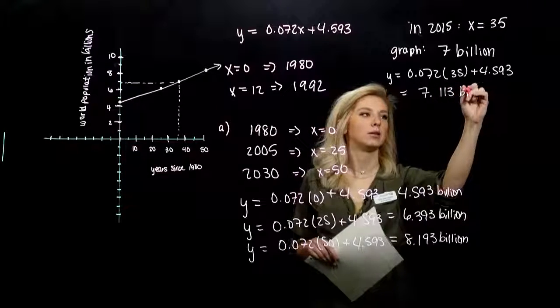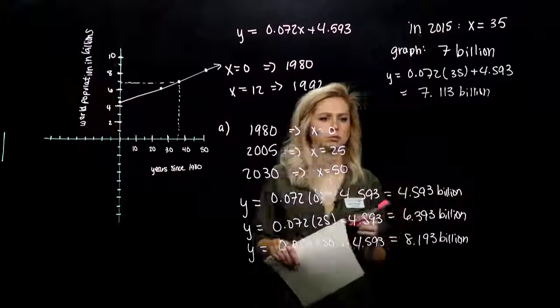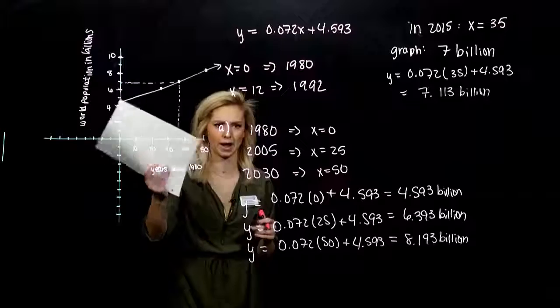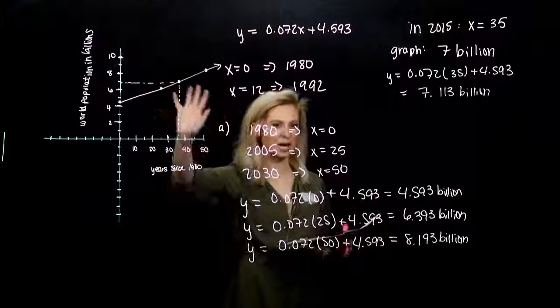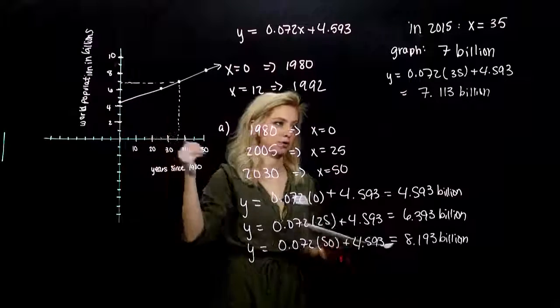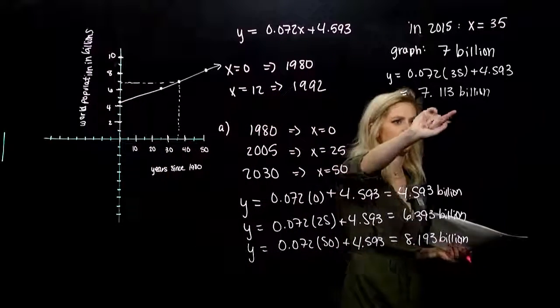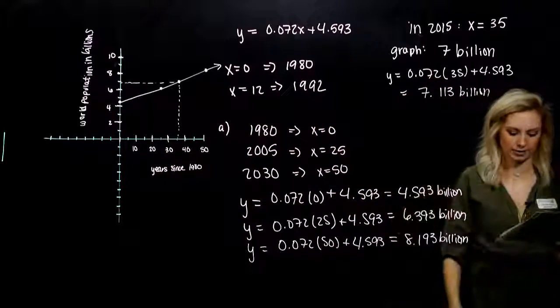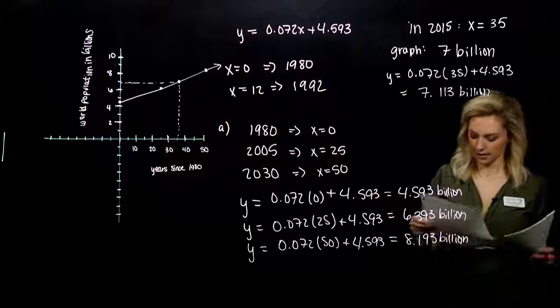7.113 billion. So pretty darn close, just based off of our graph. Doing it by hand is not very accurate, but it gives us a good visual about what's going on in the model, then will provide us a little bit more accuracy.